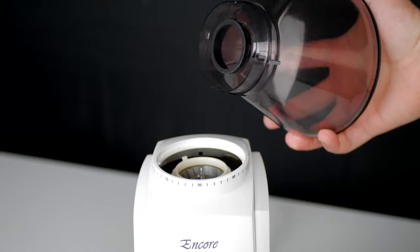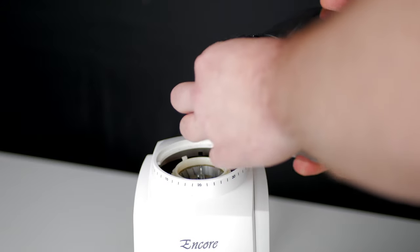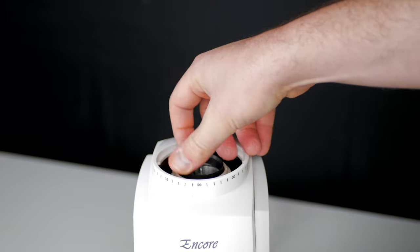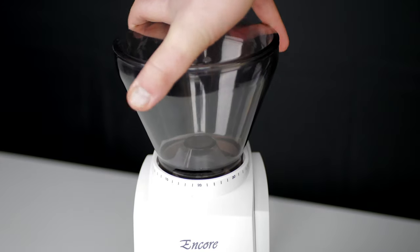Sometimes, you may find that the gasket attaches itself to the base of the hopper while removing. This is normal, just place the gasket directly onto the burr holder before reinstalling your hopper.